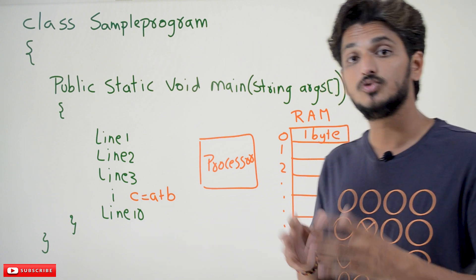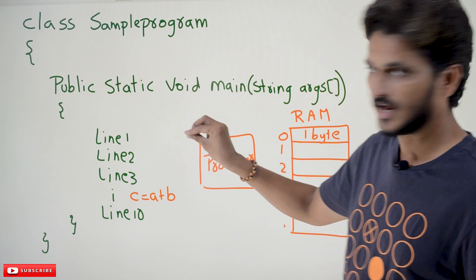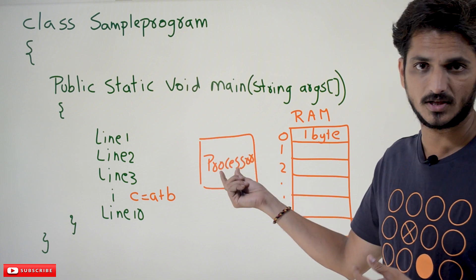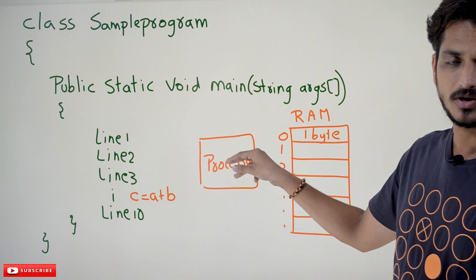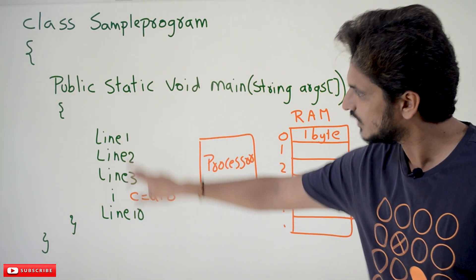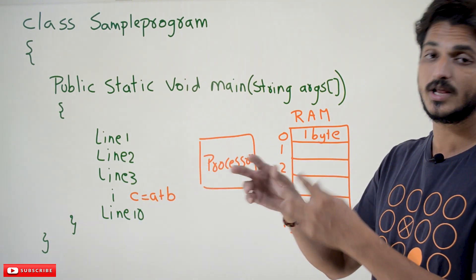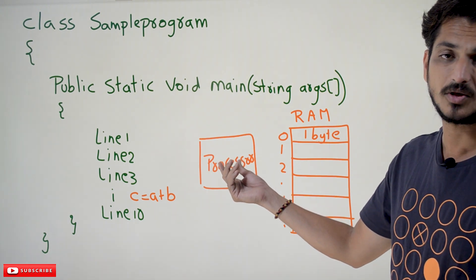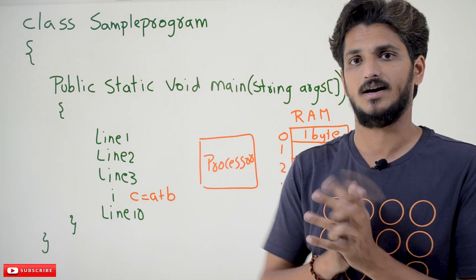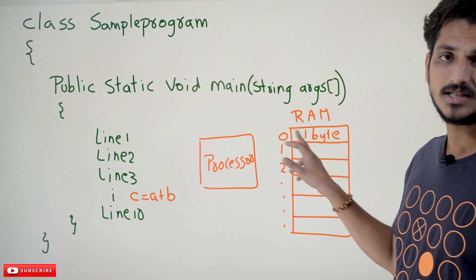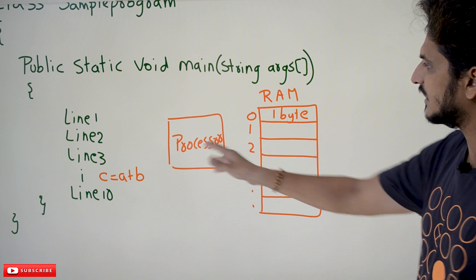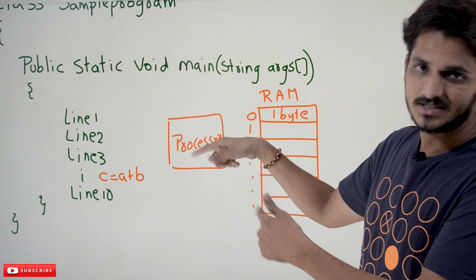How is it going to execute? It is going to execute line by line. Take the first line, place it in the processor. So where does the coding execute? It executes in the processor. Take the first line, execute in the processor. Take the second line, execute in the processor. Third line, fourth line, and so on — here we have mentioned 10 lines. That is how it takes line by line and starts executing in the processor. While executing, if the program needs any data, it will check the data in the random access memory and get the data from RAM.